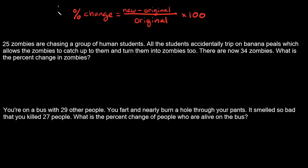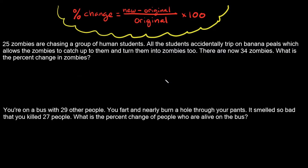Before we do that, let me walk you through the percent change formula. This is the formula you're going to use whenever you're calculating percent increase or decrease. It basically says: percent change equals your new amount minus your original amount, divided by the original amount. Then you just multiply by 100 at the end to turn it into a percent.